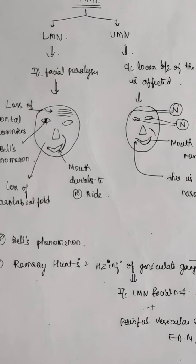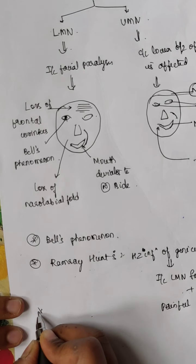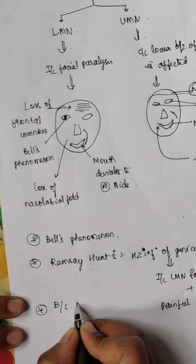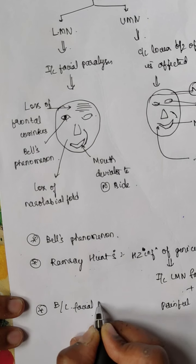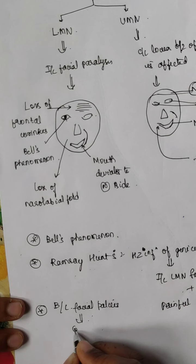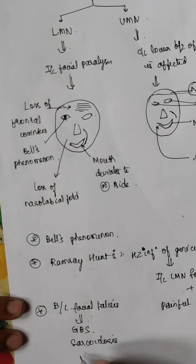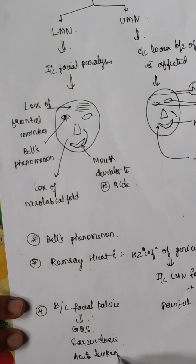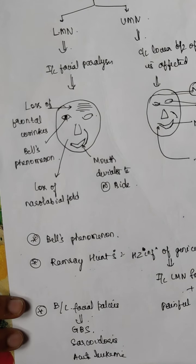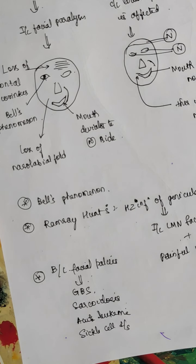You should also know that most commonly the facial nerve is affected unilaterally, but there are conditions where bilateral facial palsies can occur. These are: GBS (Guillain-Barré syndrome), sarcoidosis, acute leukemia, and sickle cell disease.